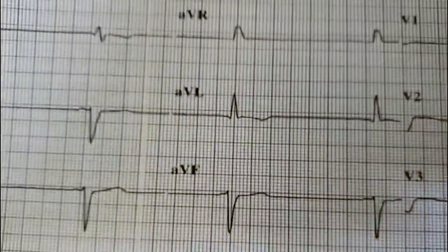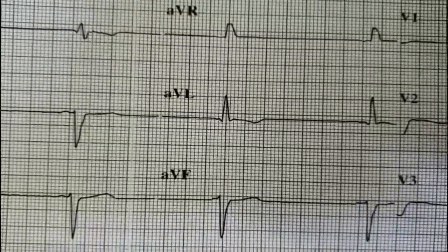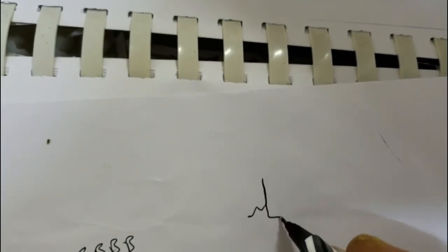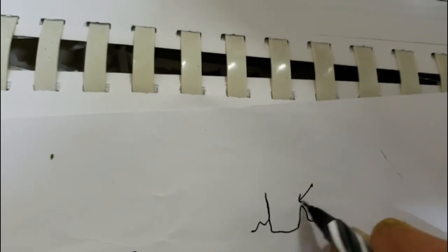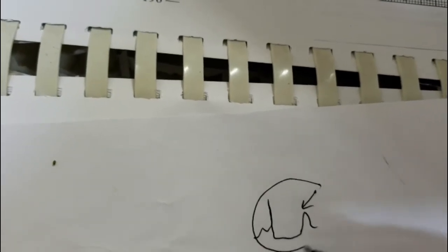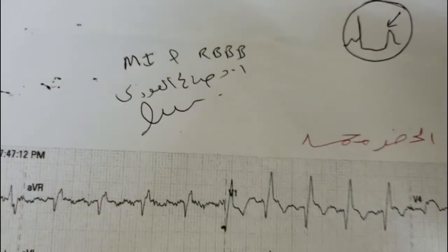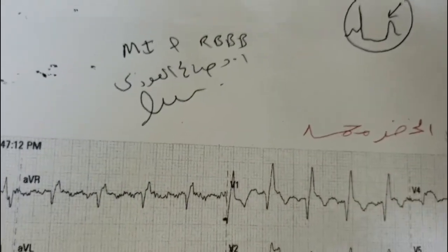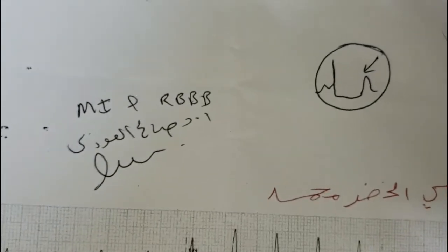In right bundle branch block, ST-segment depression and T-wave inversion are seen. However, in posterior wall myocardial infarction, V1 and V2 show a tall R-wave with ST-segment depression and elevated T-wave in V1, V2, and V3. This T-wave elevation helps discriminate between native right bundle branch block and associated posterior myocardial infarction.